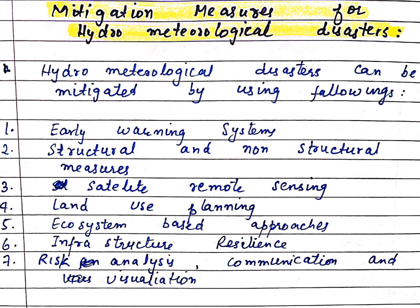Fifth, ecosystem-based approaches: we should use the environment and maintain environmental balance to take steps to reduce the impact. For example, reducing deforestation can help reduce floods. Similarly, our infrastructure and buildings should be planned and built with proper preparation, not constructed carelessly, so that the impact can be reduced.